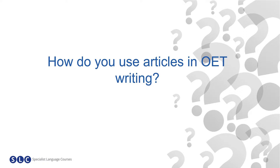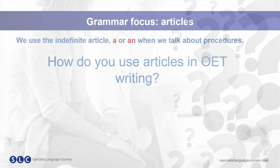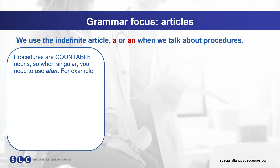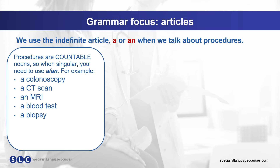How do you use articles in OET? We use the indefinite article 'a' or 'an' when we talk about procedures. Procedures are countable nouns, so when singular you need to use 'a' or 'an'. For example: a colonoscopy, a CT scan, an MRI, a blood test, a biopsy, an ultrasound, a mammogram, an operation.